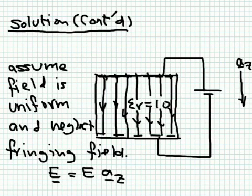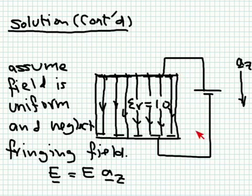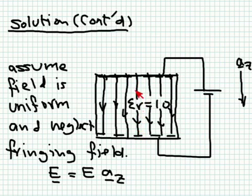We start by drawing a diagram. The battery has a positive terminal depositing positive charges on one plate and inducing negative charges on the other. The electric field points from the positive plate to the negative plate. The potential is 100 V on one side and zero on the other. Because the plate separation is small, we assume the field is entirely in the z-direction with no fringing field, so the electric field is uniform: E = E_z a_z.